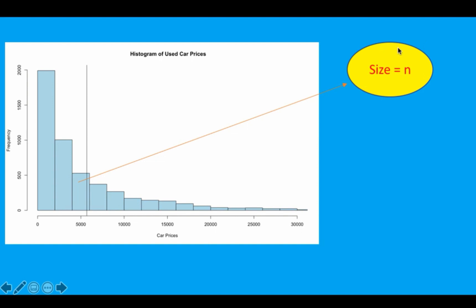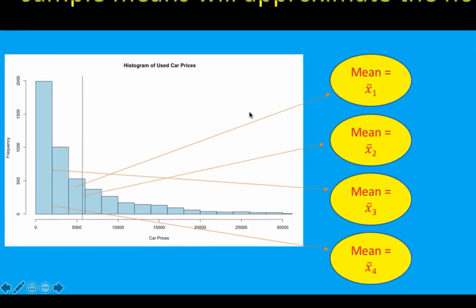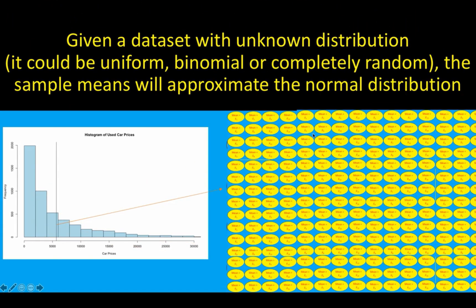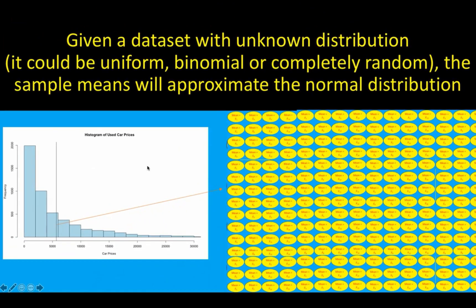This sample size of 30 has its own mean. And if we take some more random samples, and a lot more random samples, each of the samples with a size of 30 that we took randomly from the population has its own mean. Some means are higher, some means are lesser. There is variation in the values of the means that we are going to get.